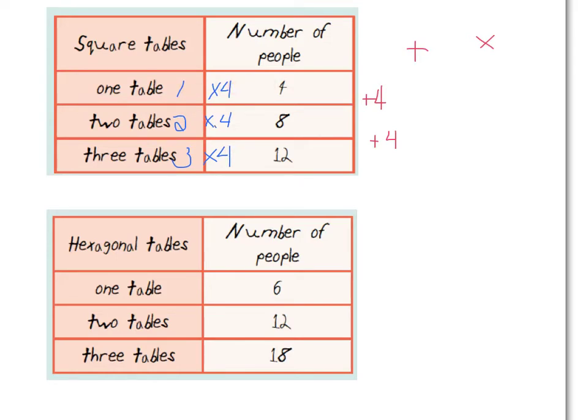The nice thing about doing a rule that goes across the table is that we can very easily use it for a much larger number. So for example, if I jump to 6, I can easily go, okay, 6 times 4 is 24. So I have my number of tables. If I were trying to use the number of people and keep going down, I would have to keep adding 4 until I got all the way down to 6. So 12 plus 4, 16, 16 plus 4, and so on and so on until we got all the way to 24, which takes more time. It's not as effective.